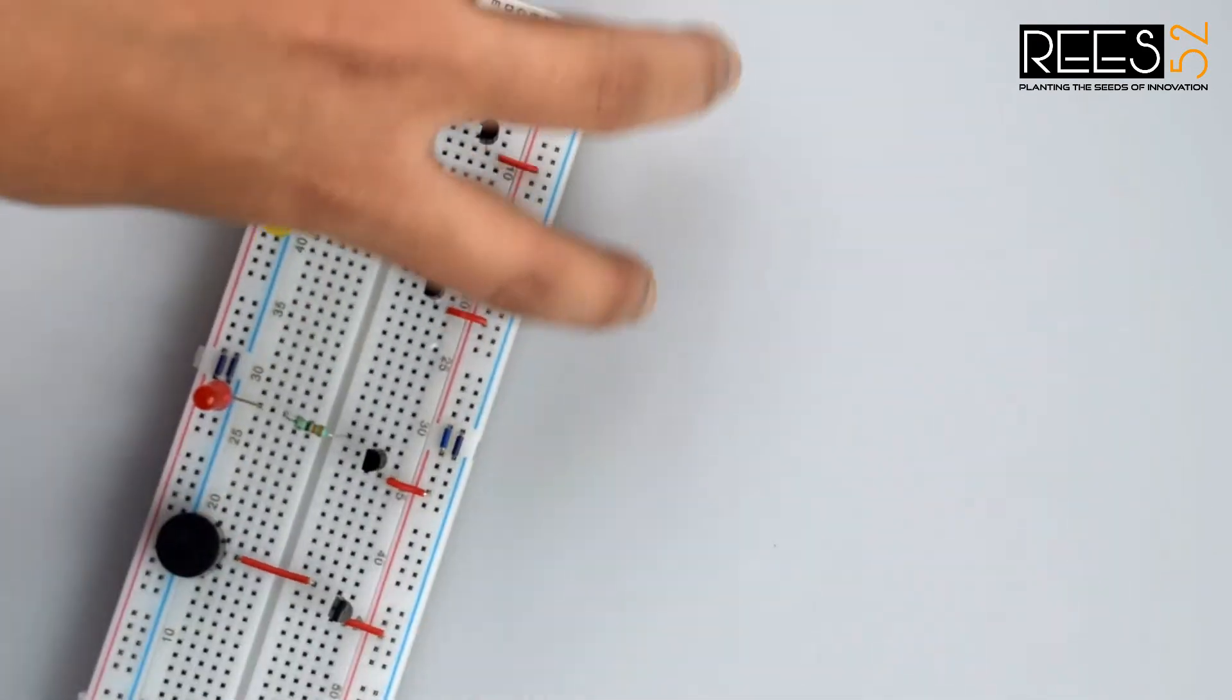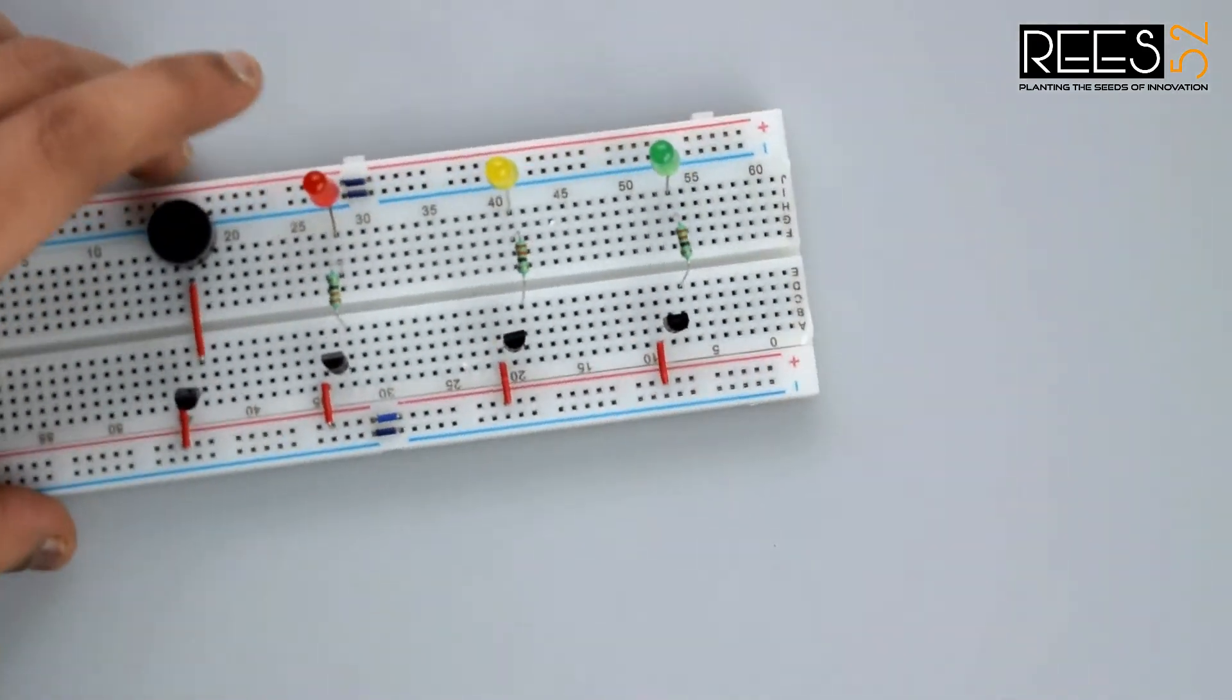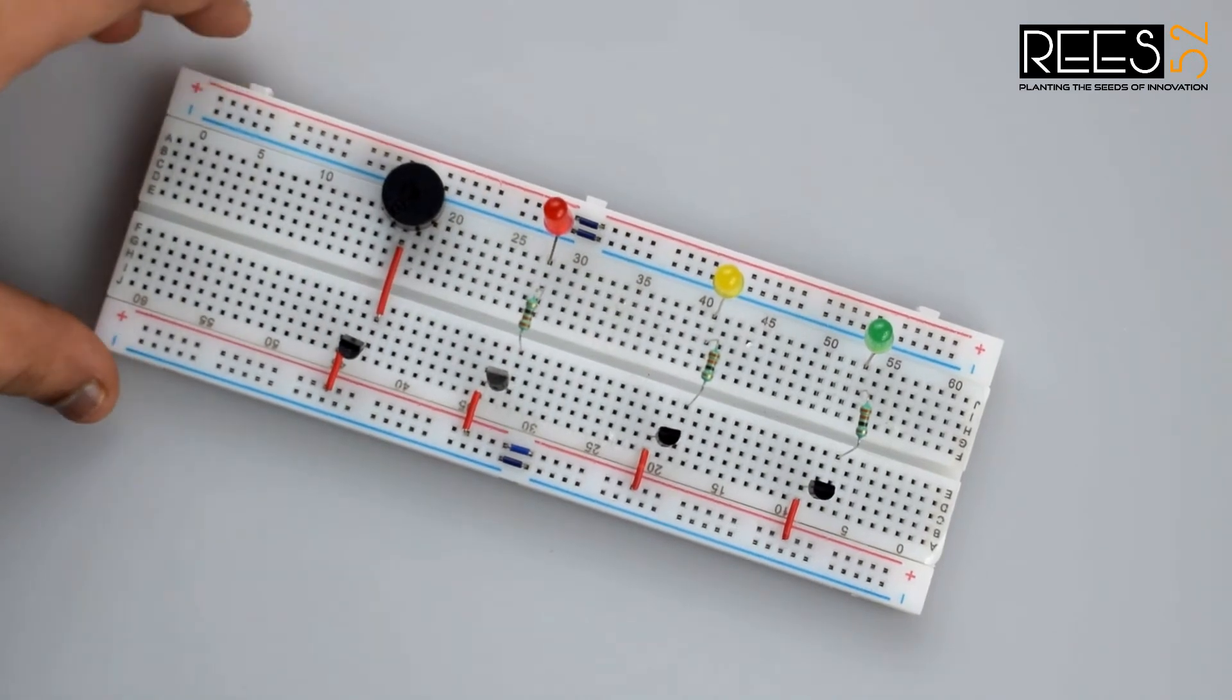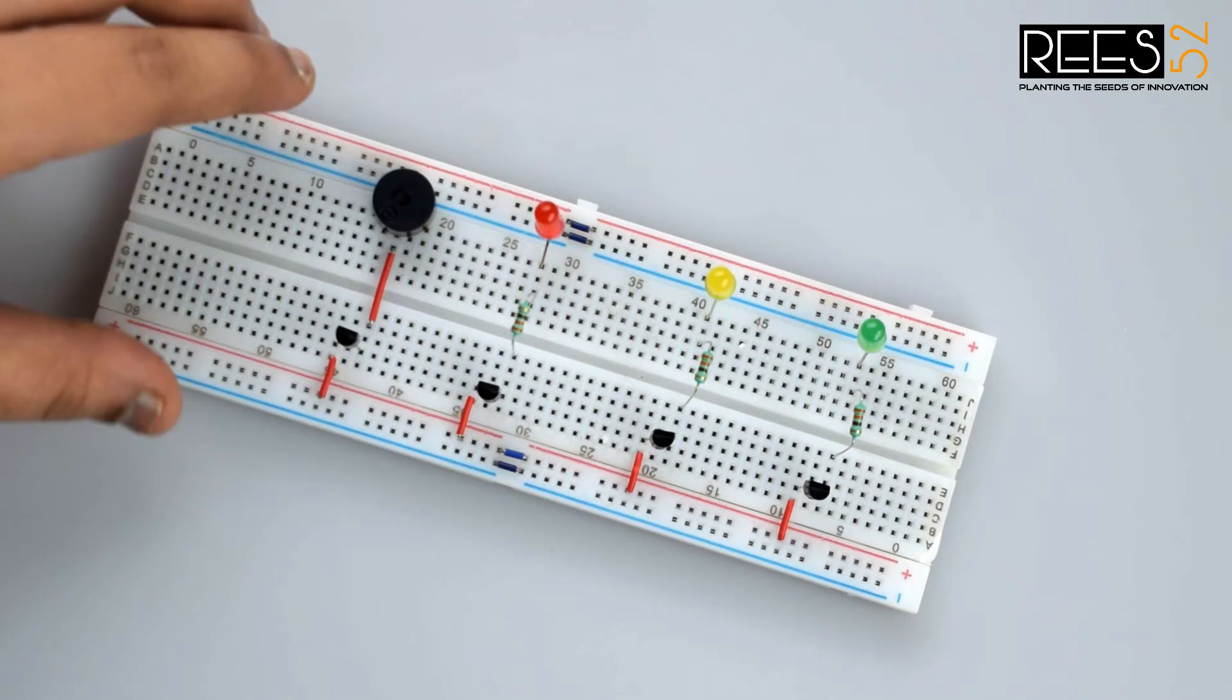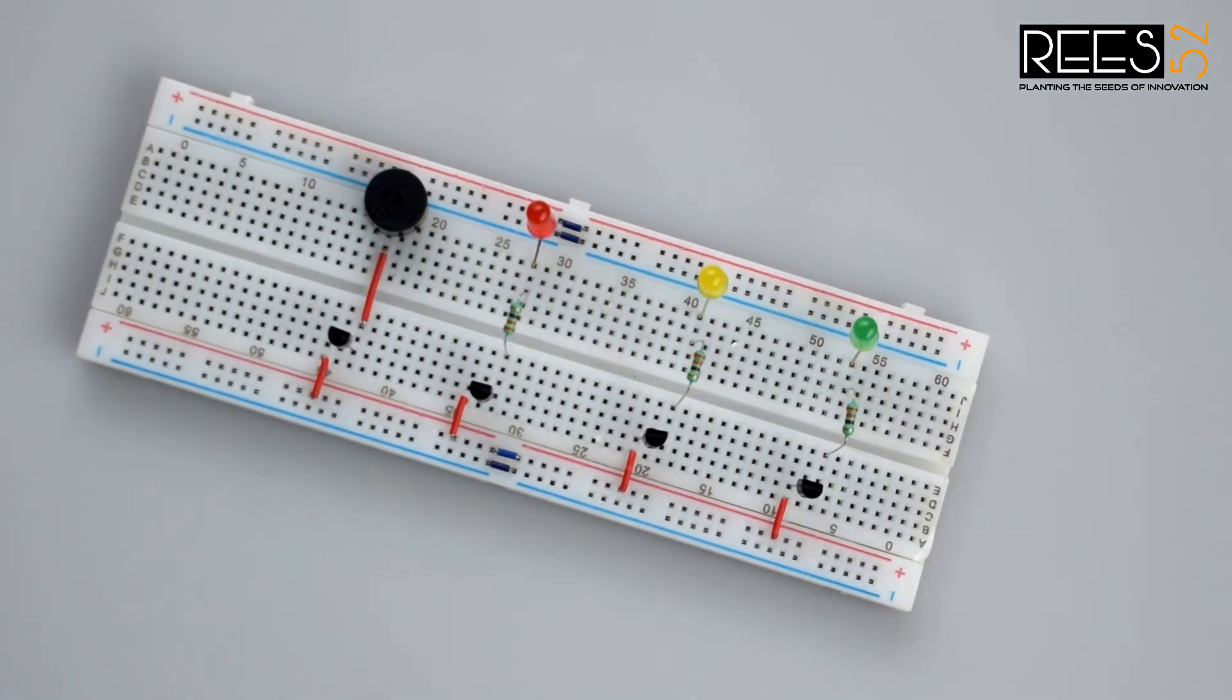Now connect all the jumper wires or the hookup wires to the base pin that is the middle pin of the transistors. Connect all the base terminals with them.